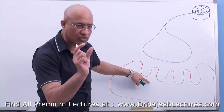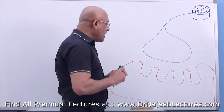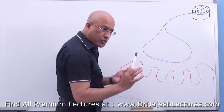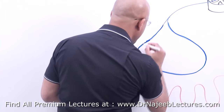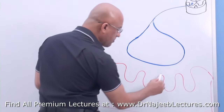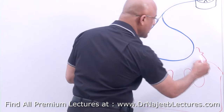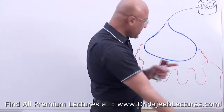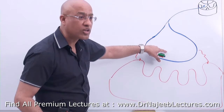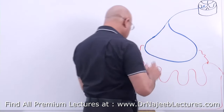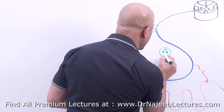The neuromuscular junction is a very specialized miniature structure where neurons influence the contraction of the muscle. The components are: this nerve ending is the presynaptic component, and this is the postsynaptic component. The gap between them is called the synaptic cleft. The neuron controls the muscle by releasing the neurotransmitter acetylcholine, so the nerve ending must have vesicles full of acetylcholine.